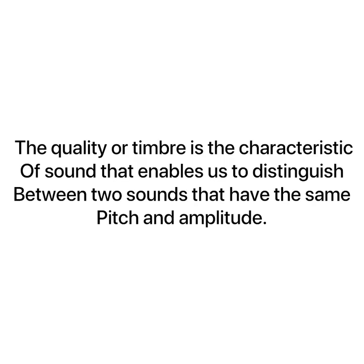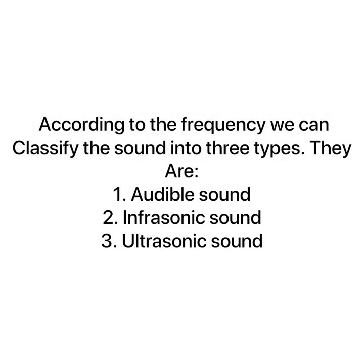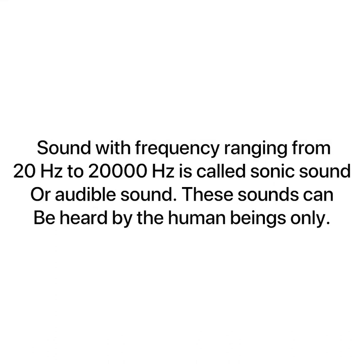Next is quality or timbre — the characteristic of sound that enables us to distinguish between two sounds that have the same pitch and amplitude. According to frequency, sound can be classified into three types: audible sound, infrasonic sound, and ultrasonic sound. Audible sound has a frequency ranging from 20 Hz to 20,000 Hz and can be heard by human beings.